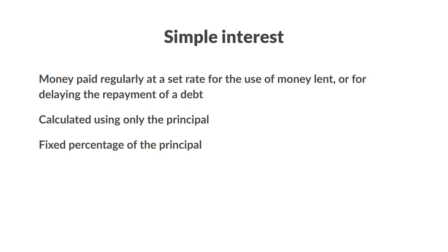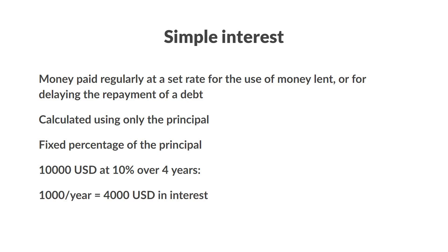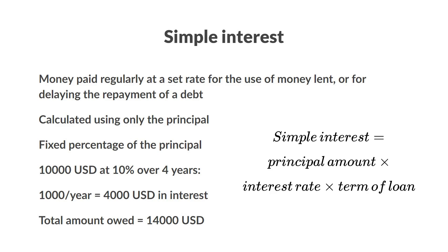For example, if you borrow $10,000 at an annual interest rate of 10% over 4 years, using simple interest, the loan will cost you $1,000 every year. So $1,000 times 4 years is $4,000. And when we add that to the principal, that means you'll end up owing a total of $14,000. Pretty simple and easy, and you can calculate it using this formula.